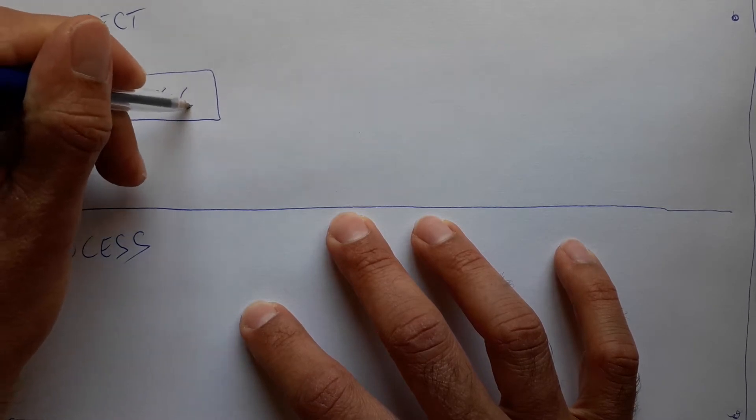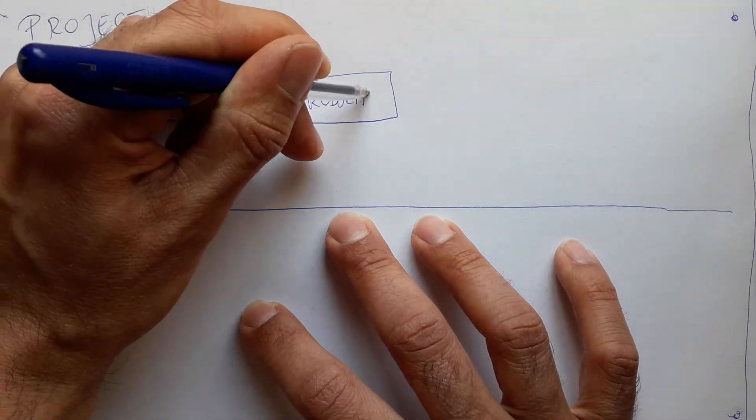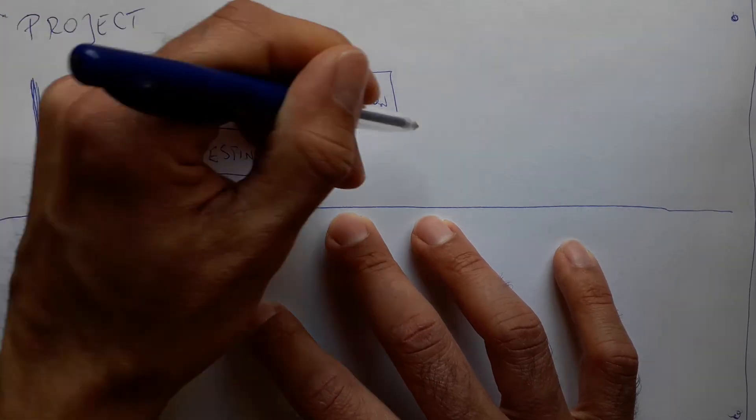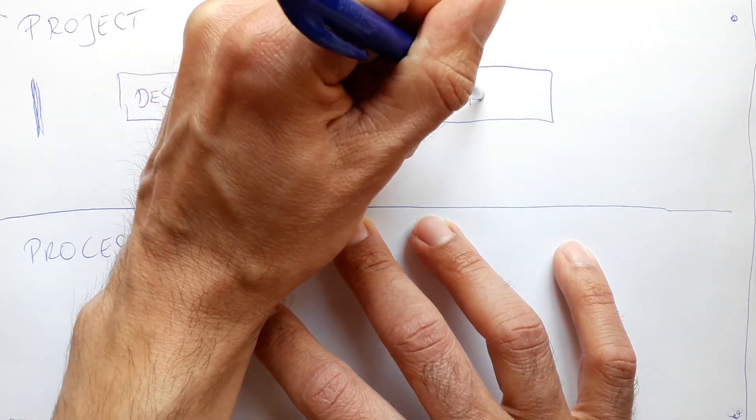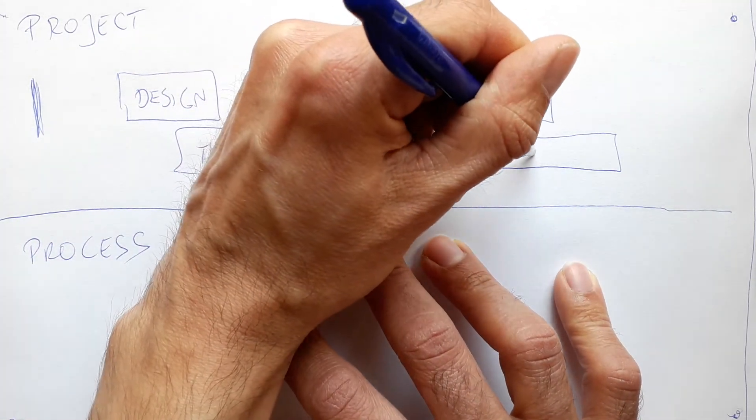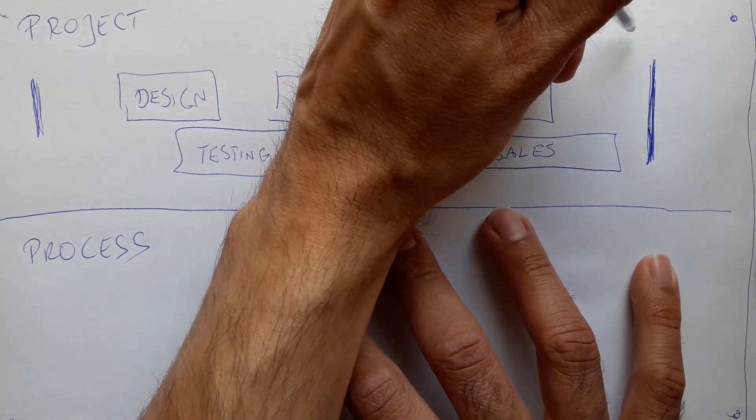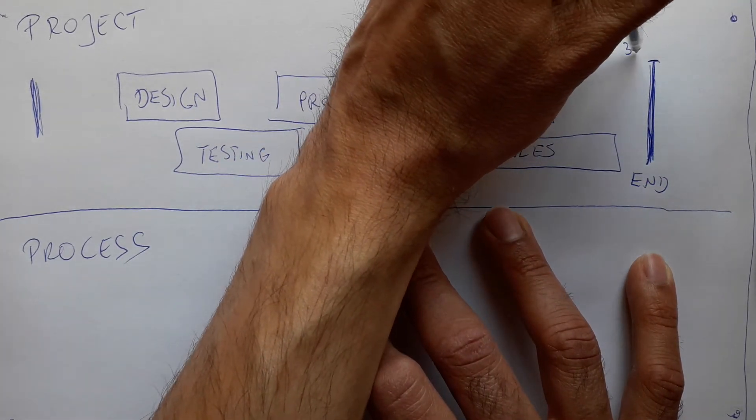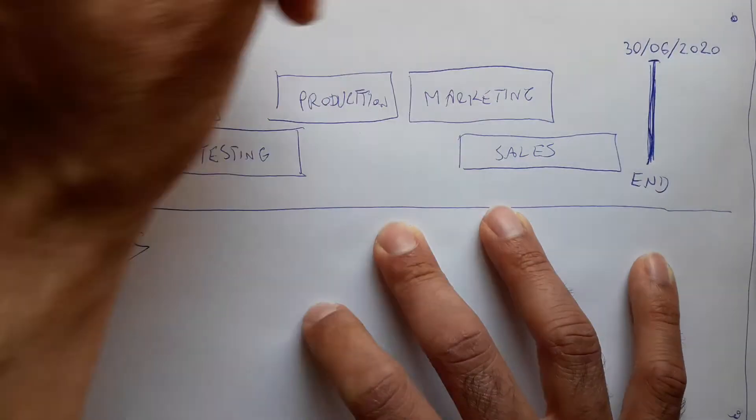Activity two can be production. In the meantime, there will be some testing, then it will be marketing and sales, and this will have an end. For example, 30th of June 2020.